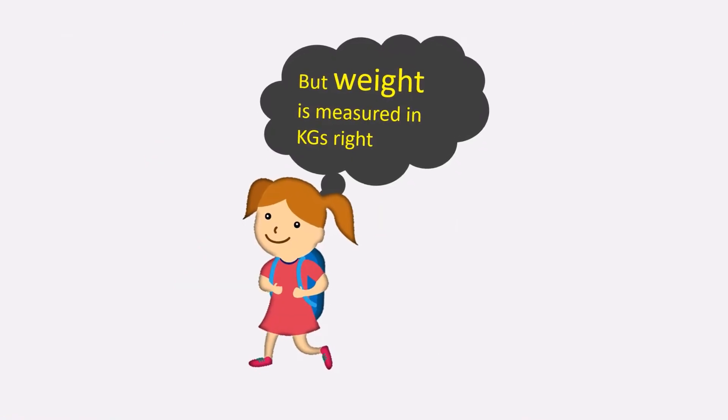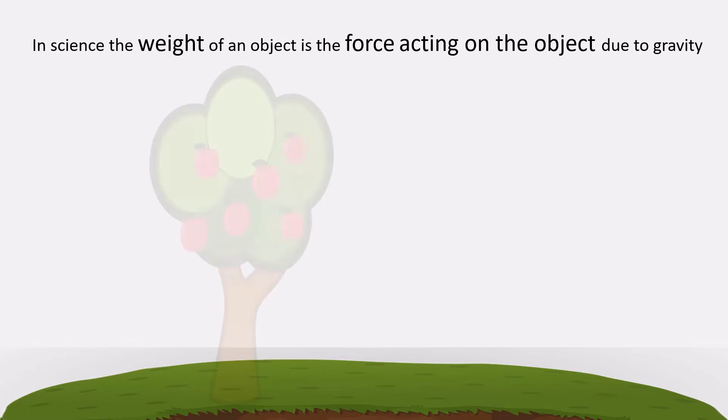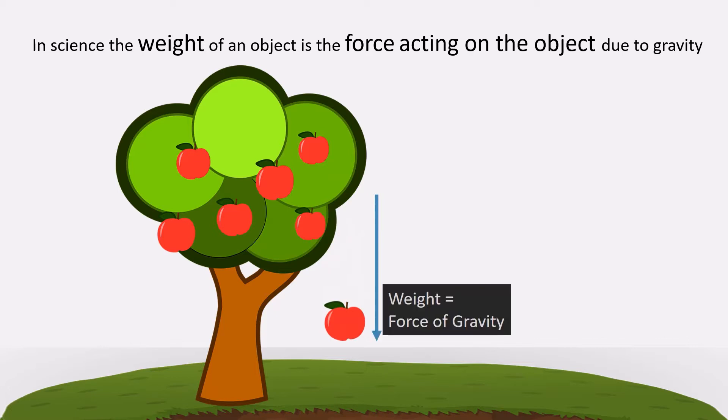But weight is measured in kgs, right? In science, the weight of an object is the force acting on the object due to gravity. When an apple is falling down from a tree, its weight is the force acting on it due to the gravity of earth. Weight is measured in newtons, a unit of force.